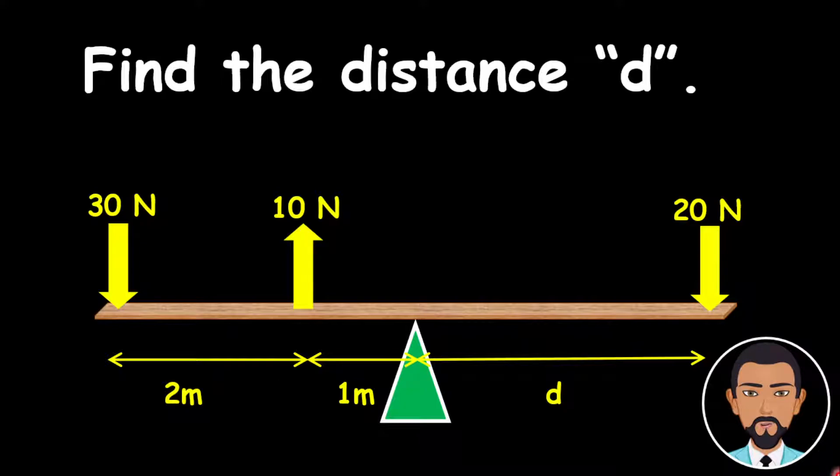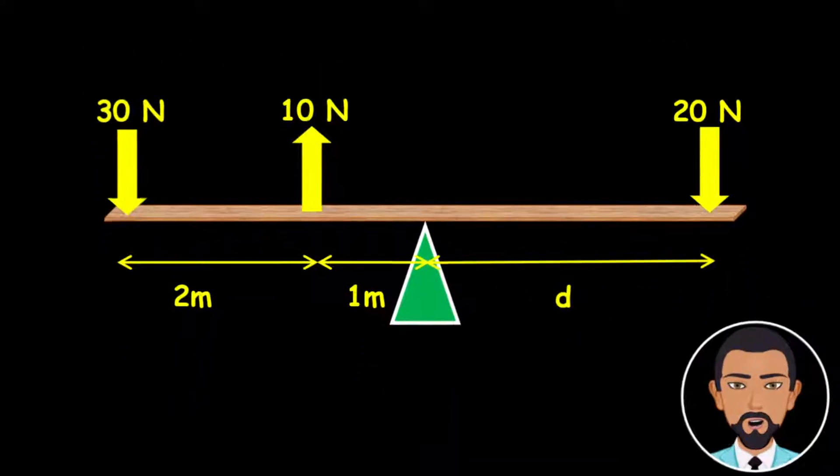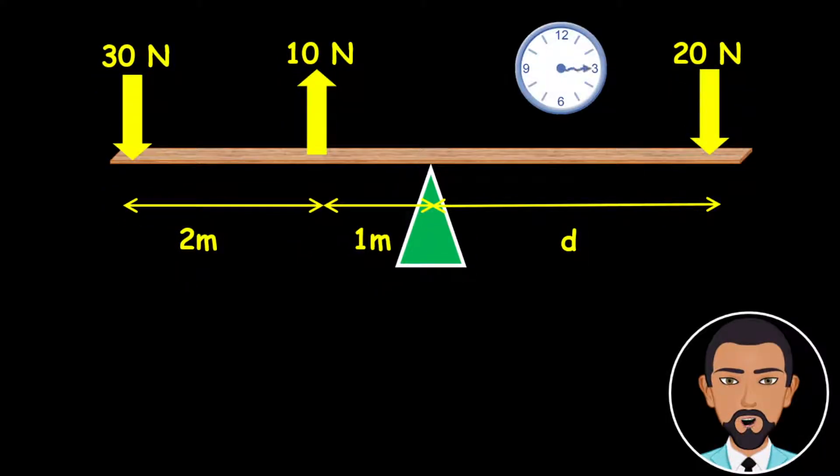Now to look at this system as it is balanced, the first thing you want to do is to consider what type of moment is being created. And so what you're going to look at is each force and how they are turning towards the pivot.